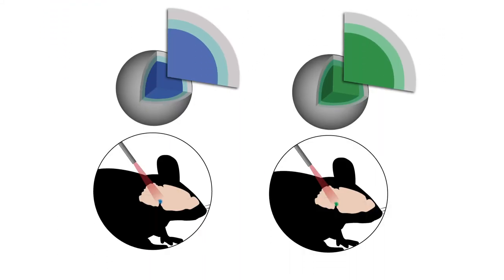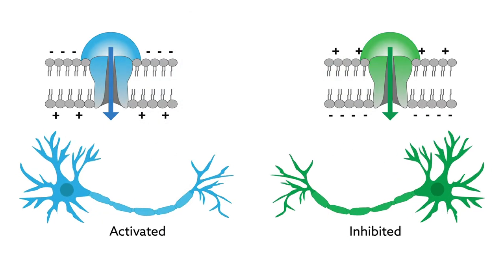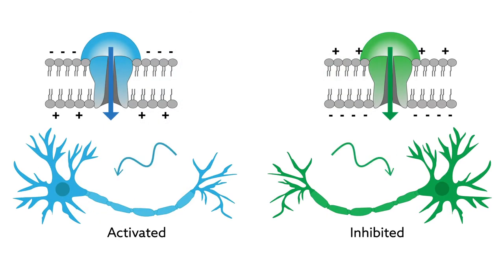The team also altered the particles to make them emit different wavelengths of light. By changing whether the particles emitted green versus blue light, for example, they could selectively activate or inhibit neighboring neurons that contain different types of light-responsive proteins.